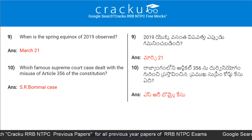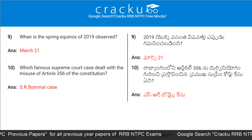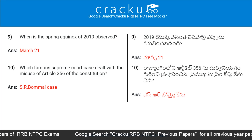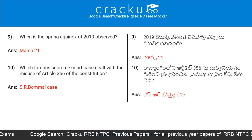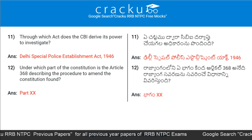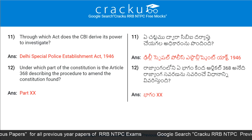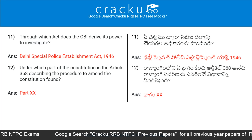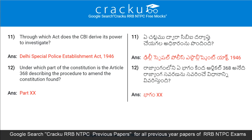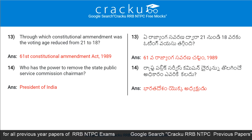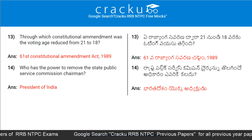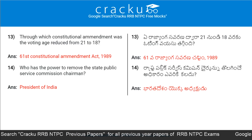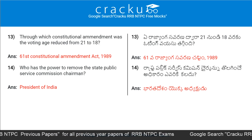When is the spring equinox of 2019 observed? March 21. Which famous Supreme Court case dealt with the misuse of Article 356 of the constitution? SR Bommai case. Through which act does the CBI derive its power to investigate? Delhi Special Police Establishment Act 1946. Under which part of the constitution is Article 368, describing the procedure to amend the constitution, found? Part 20. Through which constitutional amendment was the voting age reduced from 21 to 18? 61st Constitutional Amendment Act 1989.